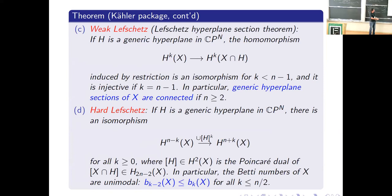Here n is the dimension of the projective manifold and we are moving from degree n minus k to n plus k by cupping with the k-th power of the Chern class of an ample bundle. In particular, the Betti numbers of X are unimodal below the middle degree.